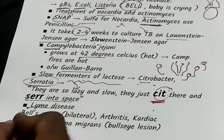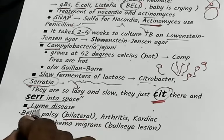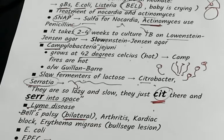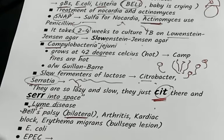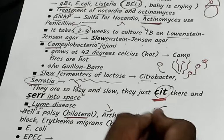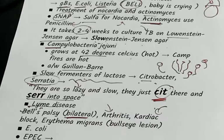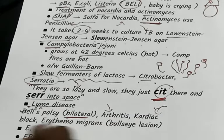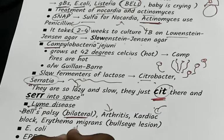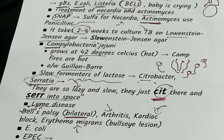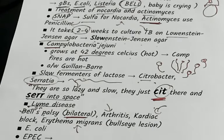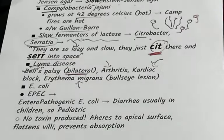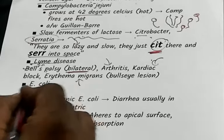For Lyme's disease, remember it leads to Bell's palsy, especially bilateral Bell's palsy — you should think Lyme's disease. It also causes arthritis, cardiac block, and erythema migrans.